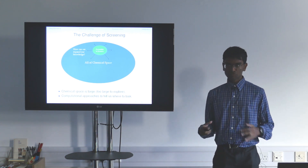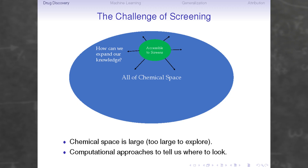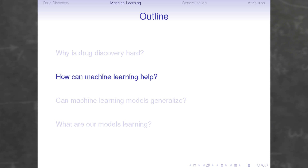This accessible space generally consists of around a million molecules that are easy to synthesize and easy to produce, but as a result are generally very similar. It's hard for us to get an idea of what's going on outside of that — if there are active molecules elsewhere, it's very difficult to find them. One of the goals of computational approaches is to tell us what regions of chemical space might contain additional actives. However, screens have produced a large amount of data, and that's one of the reasons why machine learning approaches have become popular.